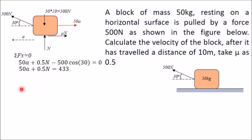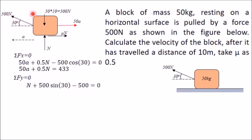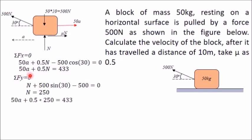Now applying the second equation, sigma Fy equal to 0: N in the positive y direction, minus 500 Newton weight, plus 500 sin 30 in the positive y direction, equals 0. In this equation, the only unknown quantity is N. From this equation, N is calculated as 250 Newton. Once you get this value of N = 250 Newton, put it into the first equation to determine acceleration A.